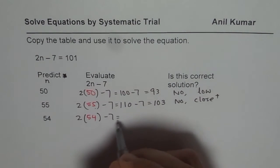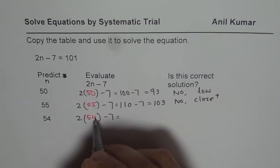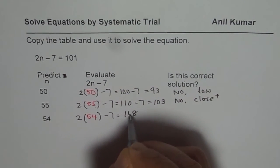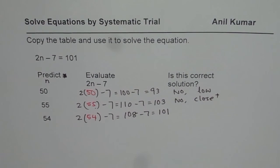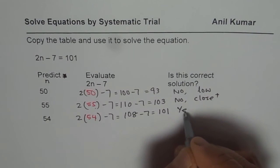So what we get here is 2 times 54 is 108, and 108 minus 7 is indeed 101, and that is correct. So we get the correct answer.